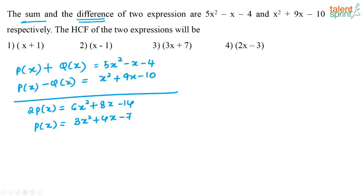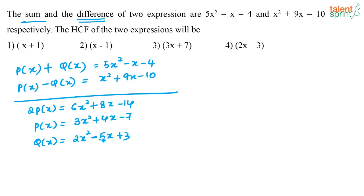Q(x) will be 2x squared minus 5x plus 3. How do we get Q(x)? I know P(x) plus Q(x) equals 5x squared minus x minus 4, and P(x) is 3x squared plus 4x minus 7. What should I add to 3x squared to get 5x squared? Add 2x squared. What should I add to 4x to get minus x? Add minus 5x. What should I add to minus 7 to get minus 4? Add plus 3. So Q(x) equals 2x squared minus 5x plus 3.